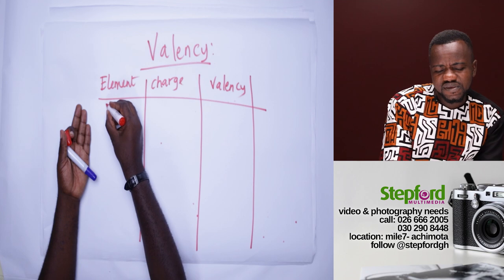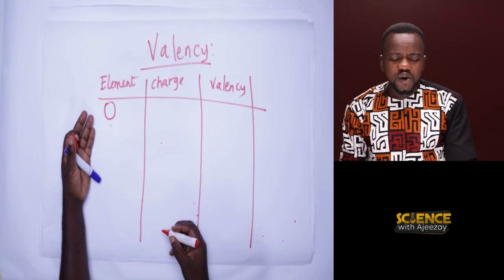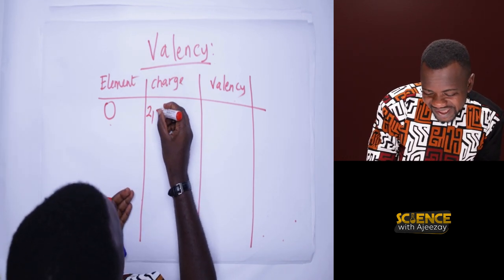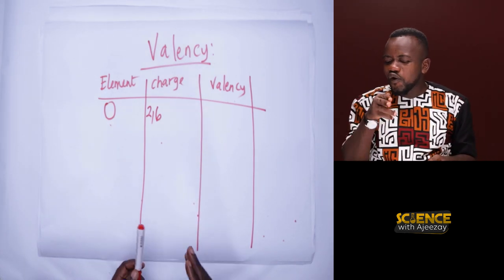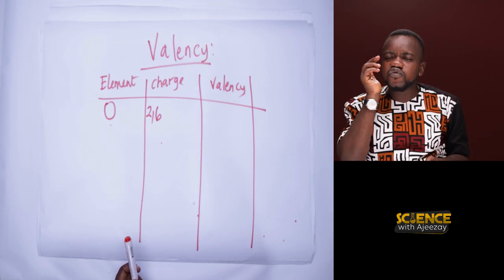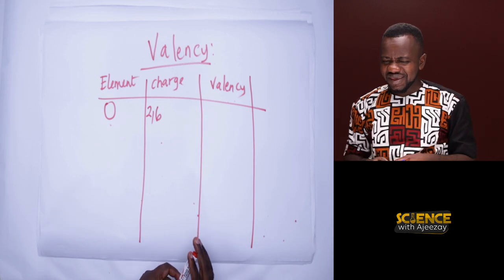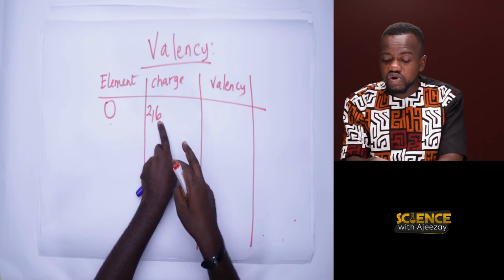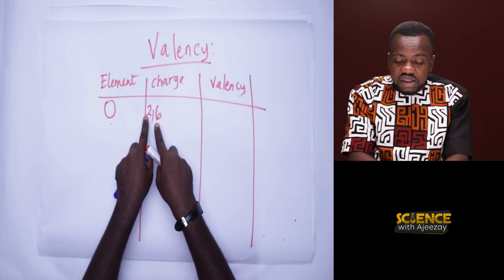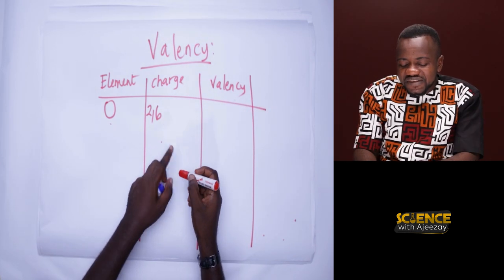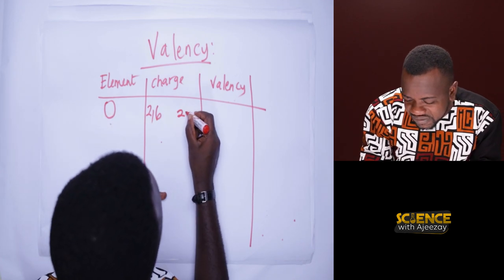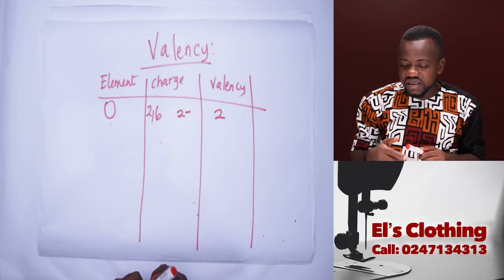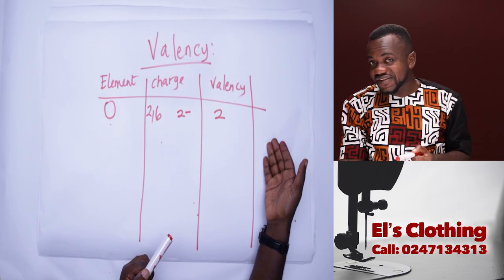Let's take oxygen. Oxygen is the eighth element and its configuration is 2 and 6. If oxygen should form a bond or form an ion, it has six outer electrons and needs two more to be stable. Any other atom available will give oxygen those two electrons to make it 2,8. So oxygen will accept, and the charge it forms is 2 minus. The valency is the number of the charge, which is two. You simply subtract six from eight to get two.